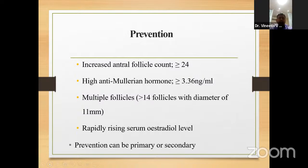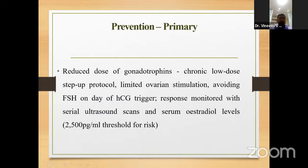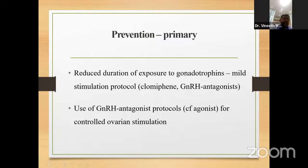Primary prevention: reduce the dose of gonadotropins as far as possible. Use a chronic low-dose step-up protocol. Limit ovarian stimulation and avoid FSH on day of HCG. Monitor with serial ultrasound scan and serum estradiol levels — a cut-off value of E2 at 2500 micrograms/mL should prompt alertness. Use mild stimulation protocols with clomiphene and GnRH agonist. GnRH antagonist protocol is preferred over agonist protocol for preventing OHSS. Avoid HCG for luteal support — always use progesterone.